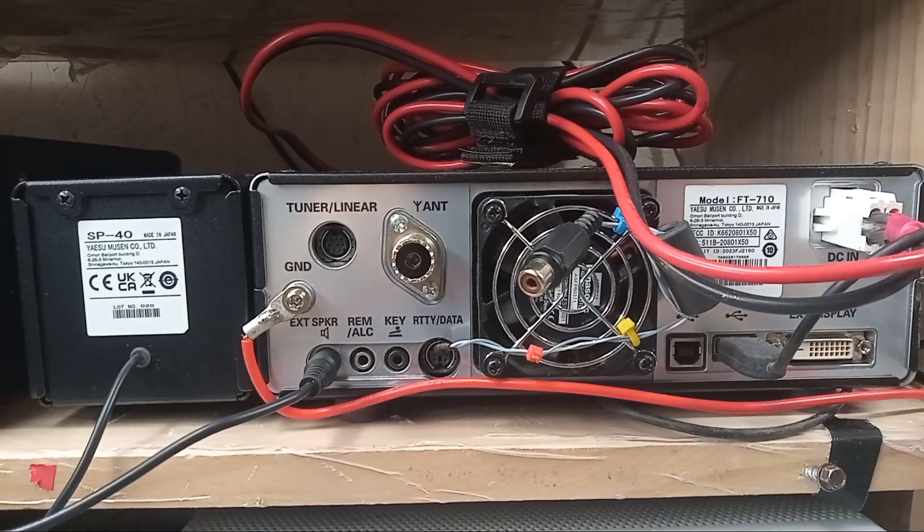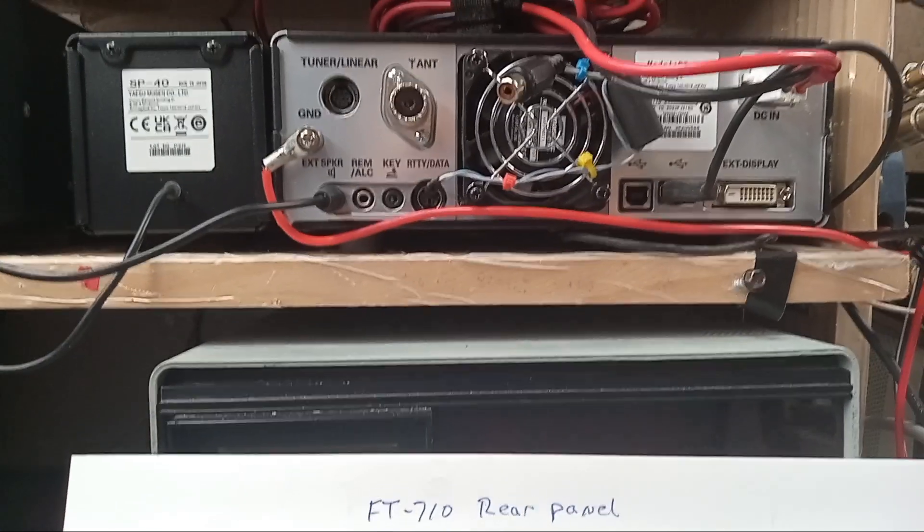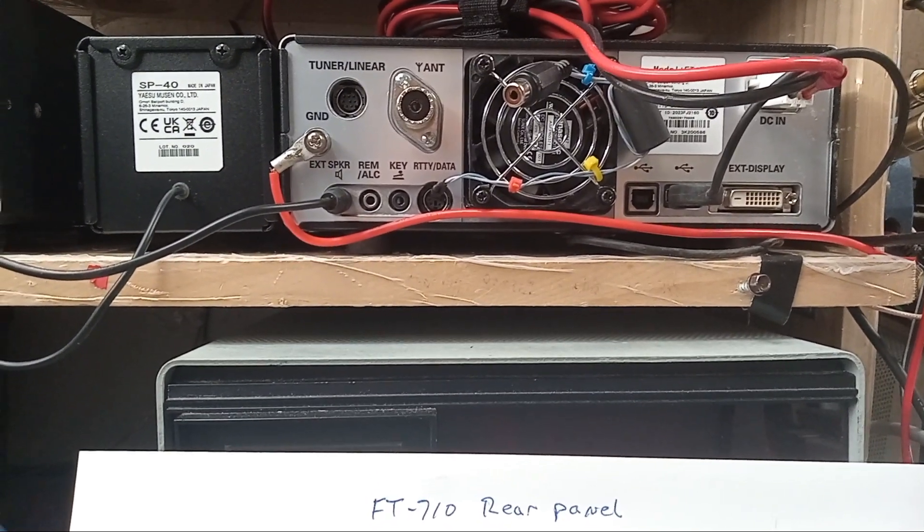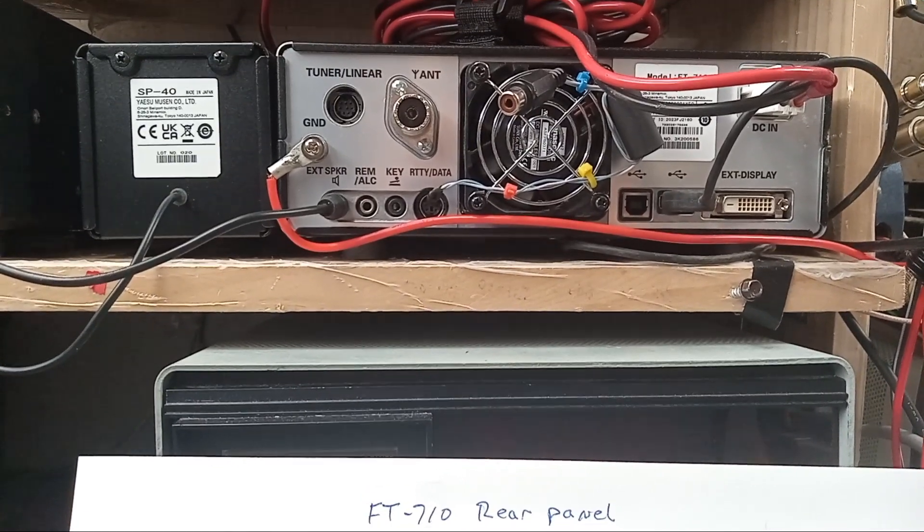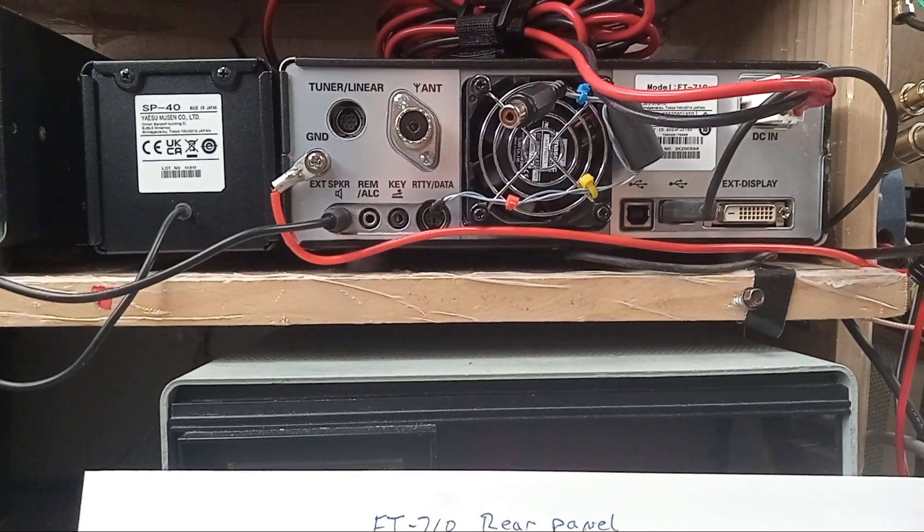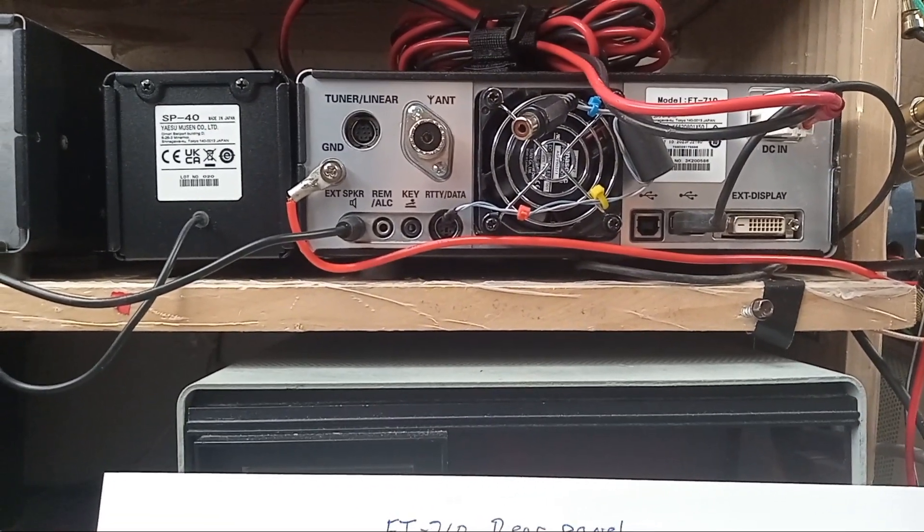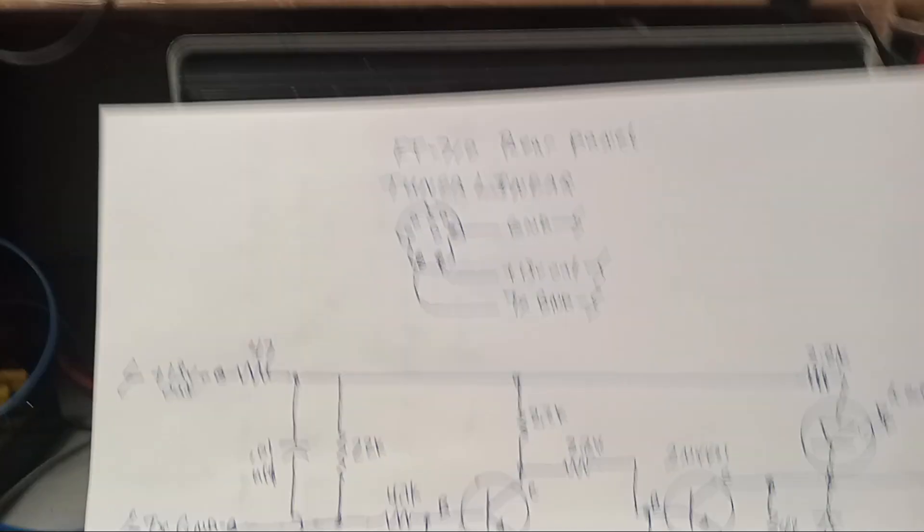And I didn't see, you're going to need whatever you do, you're going to need a cable. And I didn't see the Mercury website listing any cables that you could use for their amplifiers to a 710. Even DX Engineering did not list, now they listed cables, interfaces for the FTDX 10 and the FTDX 101 MDs and all that, but they didn't list it for the newer radio which has been out for two years now, the 710.